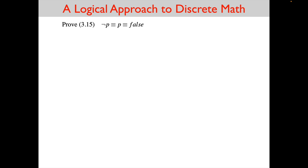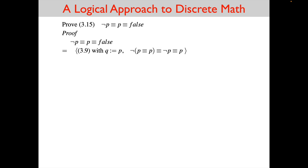Here we go with the first proof of 3.15. We start off by writing down the word 'proof', and if you are doing this by hand you would underline it. The first line of the proof is the entire theorem we are trying to prove: not P equals P equals false. Then we indent, put the hint in angle brackets, and use 3.9 with Q replaced by P.